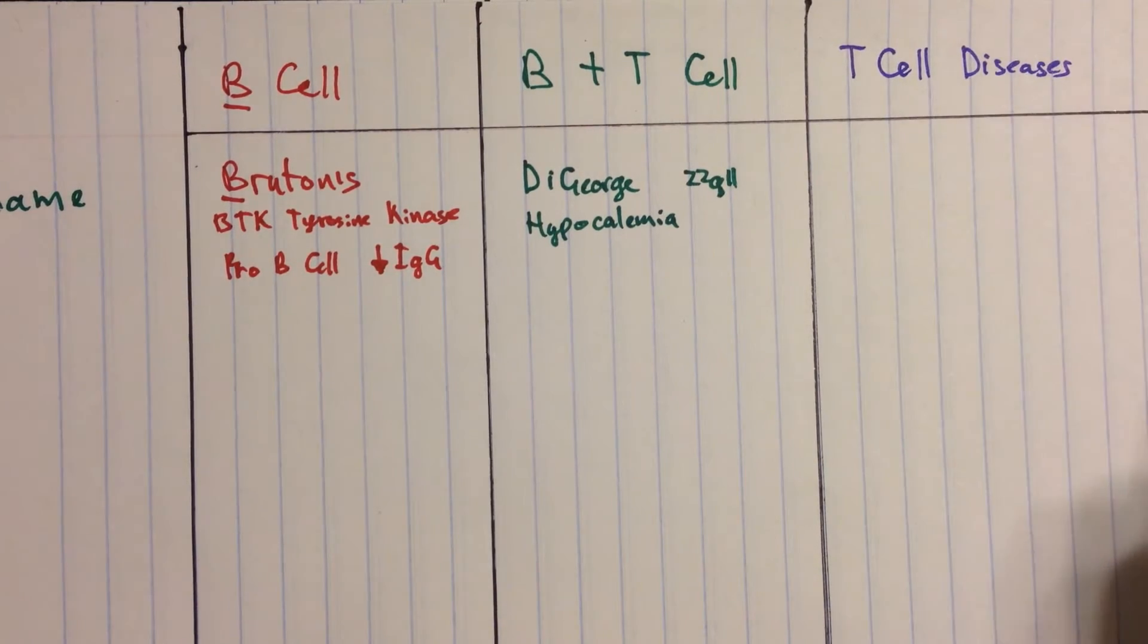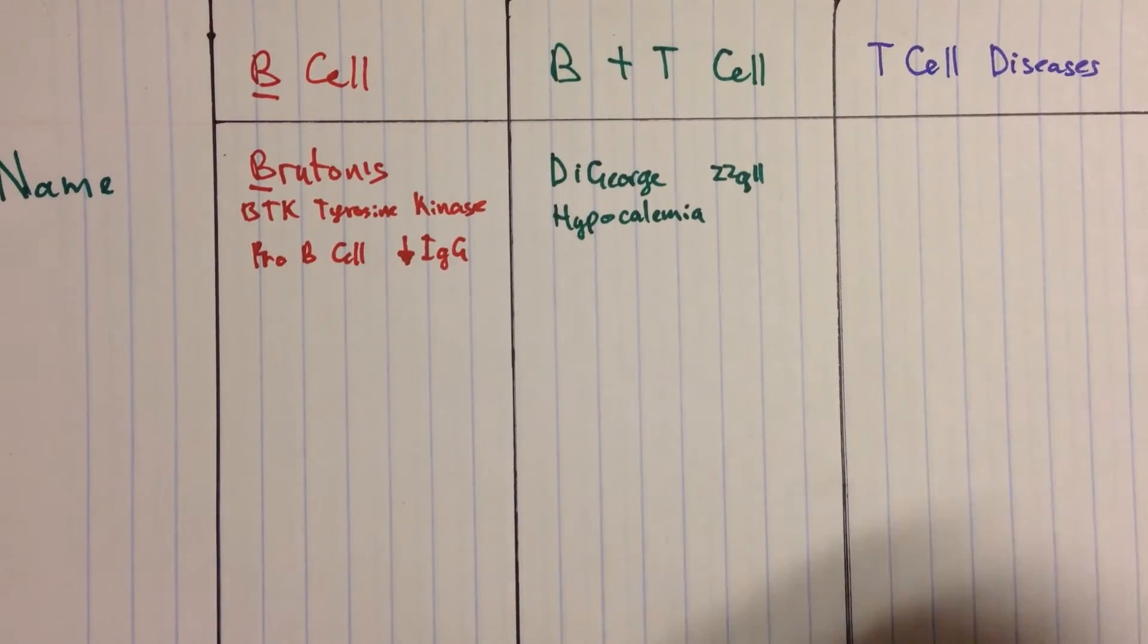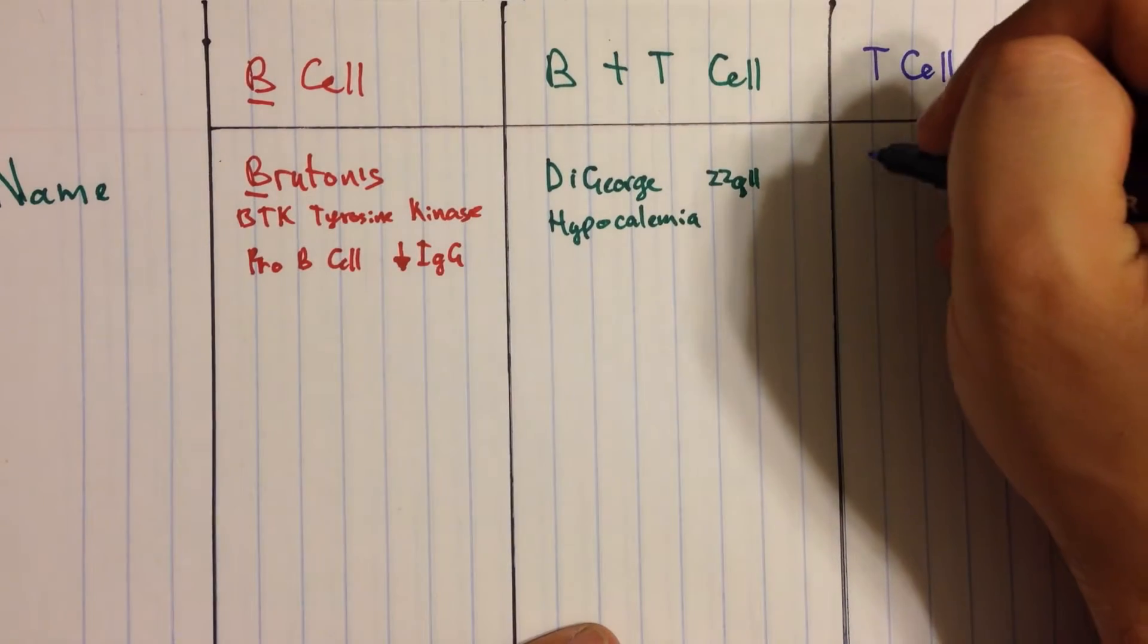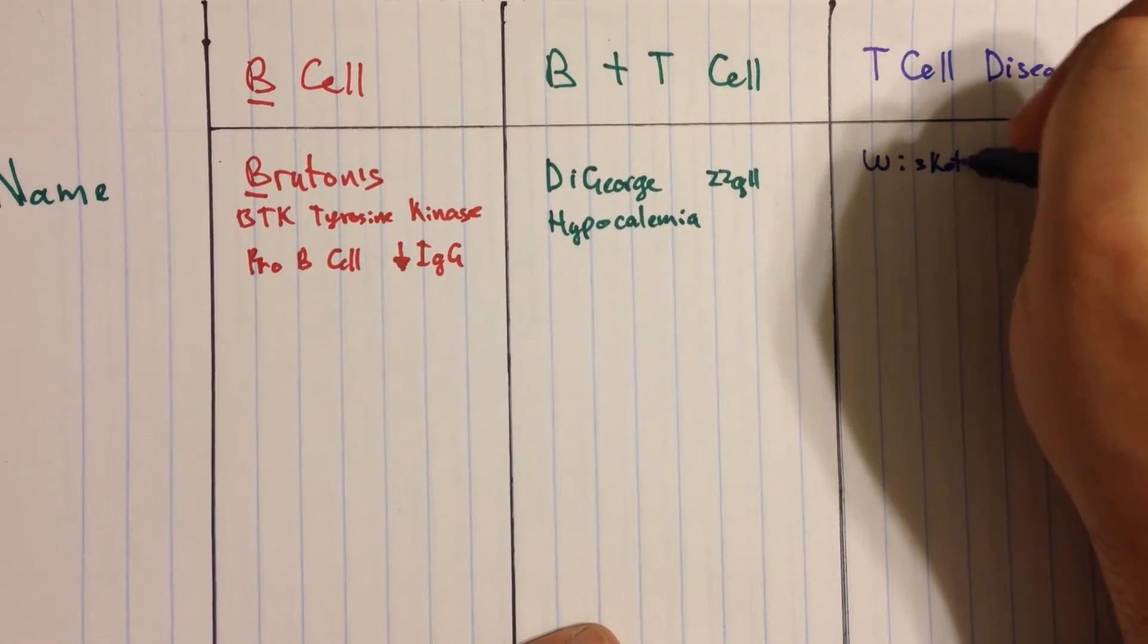Now the last disease in the category, in the T-cell diseases here, is going to be Wiscott-Aldrich.